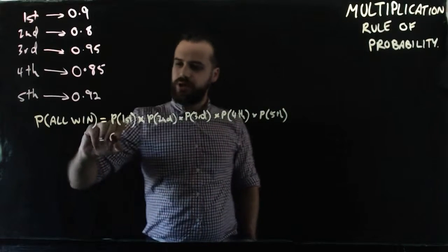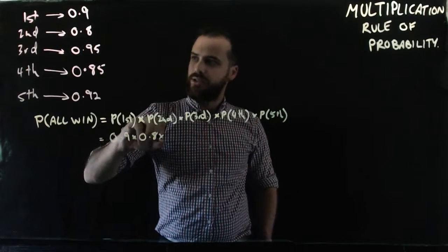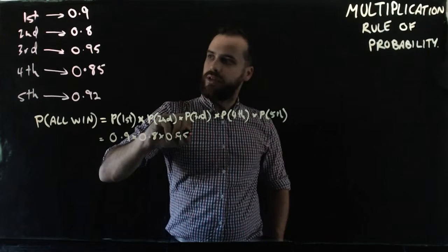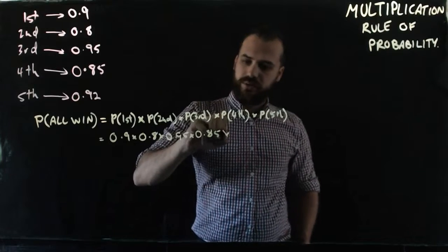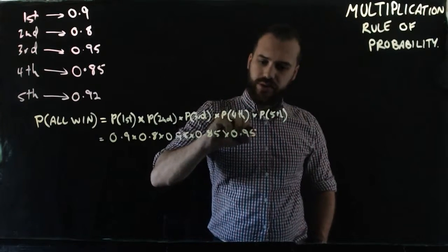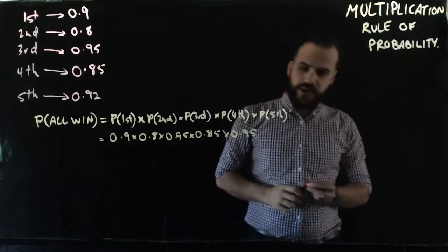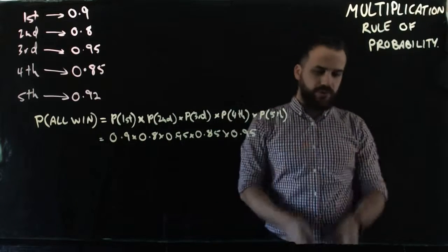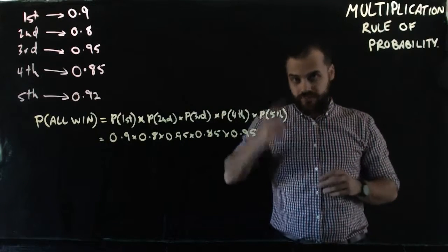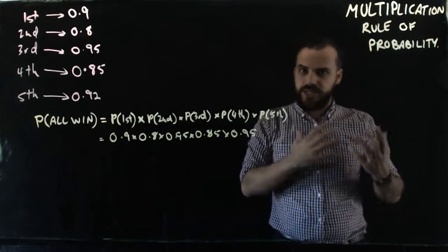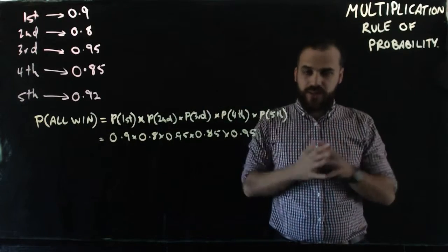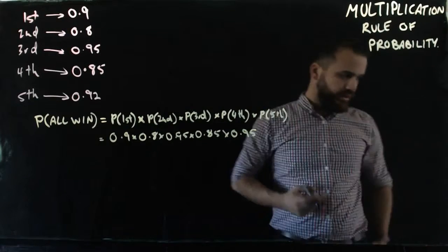That's going to be 0.9 times 0.8 times 0.95 times 0.85 times 0.92. You can put that into your calculator and I think you'll be surprised by the value. Have a think in your own head first. What do you think the probability of a clean sweep is? 100% chance, 0% chance? Where in there do you think the answer is?